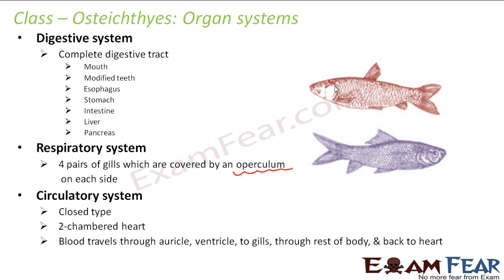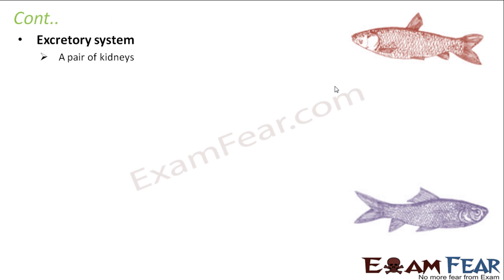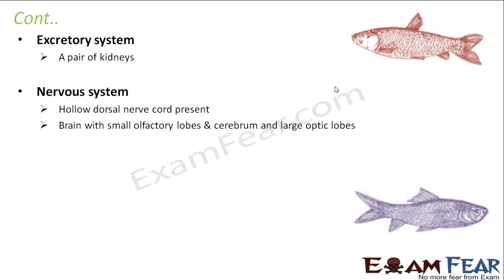The circulatory system is again closed type with a two-chambered heart — one auricle and one ventricle — with single circulation: blood travels from auricle to ventricle to gills to the rest of the body and back to the heart. The excretory system has a pair of kidneys. The nervous system has a hollow dorsal nerve cord and a brain with small olfactory lobes for smell, cerebrum, and large optic lobes for the sensation of sight.